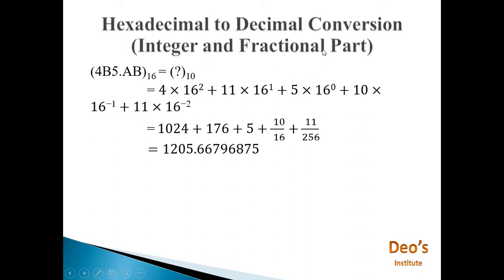Now hexadecimal to decimal with both integer and fractional parts: 4B5.AB. From the decimal point, positions to the left are 16 raised to 0, 1, 2; and to the right are 16 raised to minus 1, minus 2. So: 4 into 16 raised to 2, plus B (which is 11) into 16 raised to 1, plus 5 into 16 raised to 0, plus A (which is 10) into 16 raised to minus 1, plus B (which is 11) into 16 raised to minus 2. Performing all multiplications and additions gives the final decimal answer.